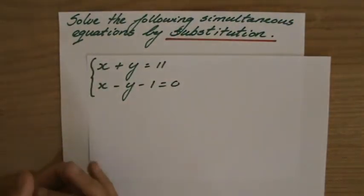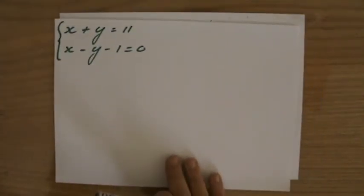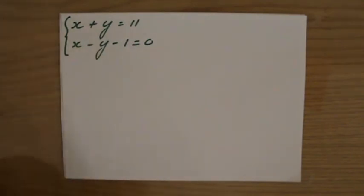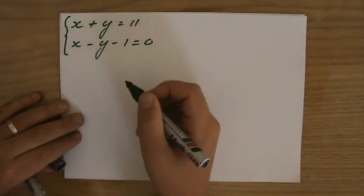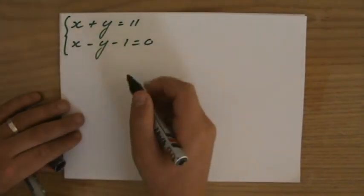Simultaneous equations by substitution. x + y = 11. x - y - 1 = 0. Now what am I going to do? I'm going to write the first equation, I'm going to make x the subject, because that's relatively easy.